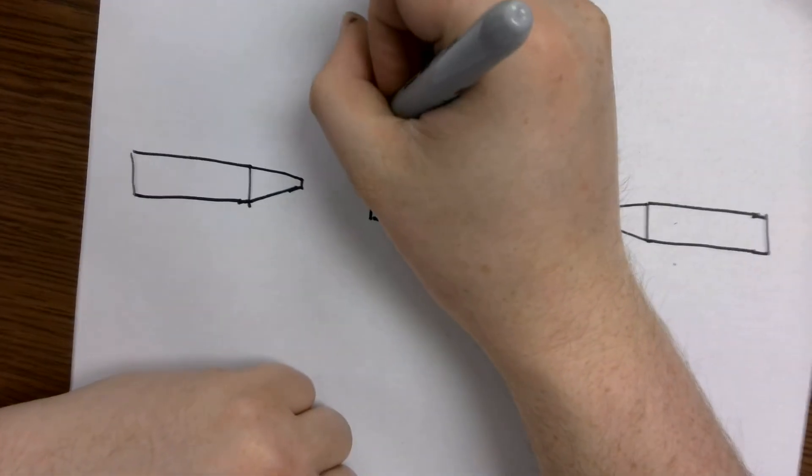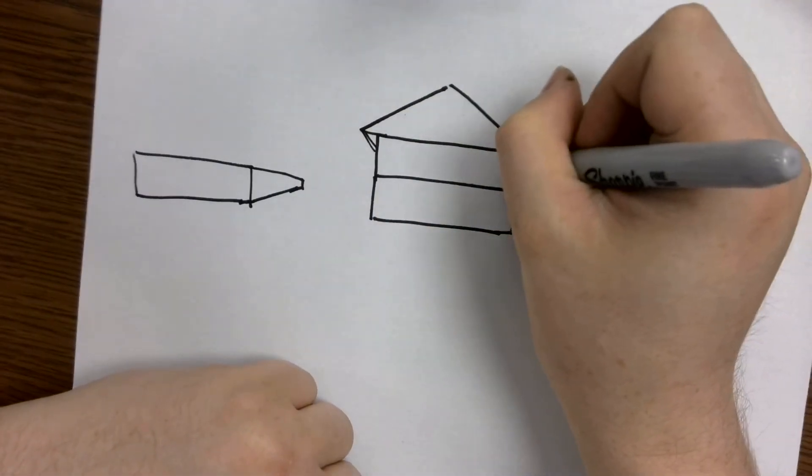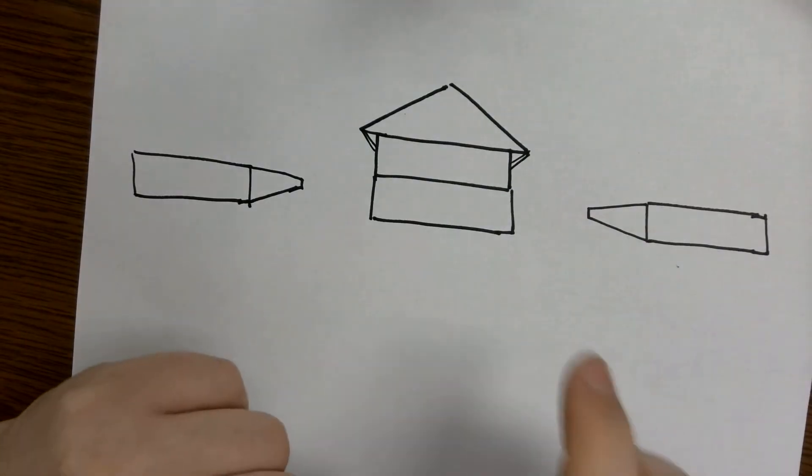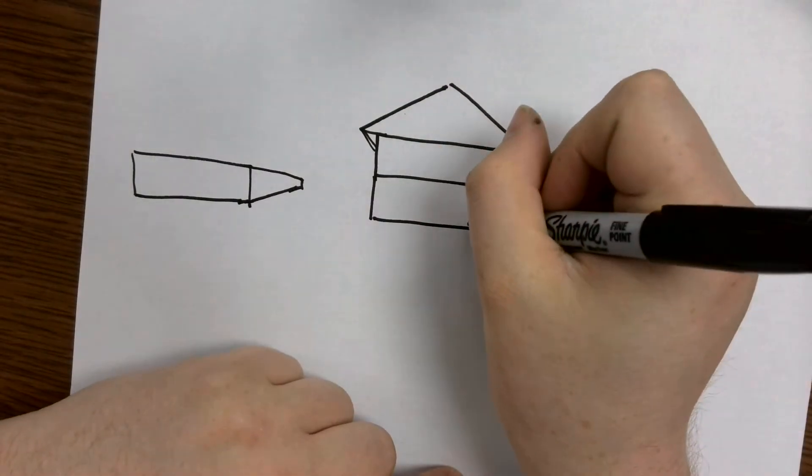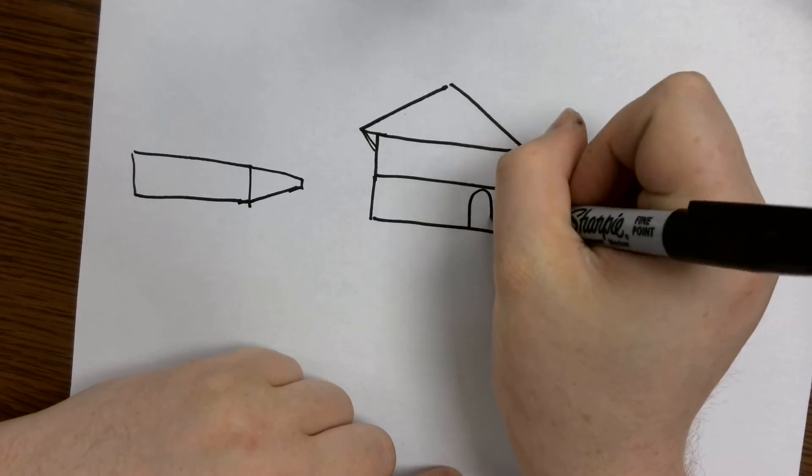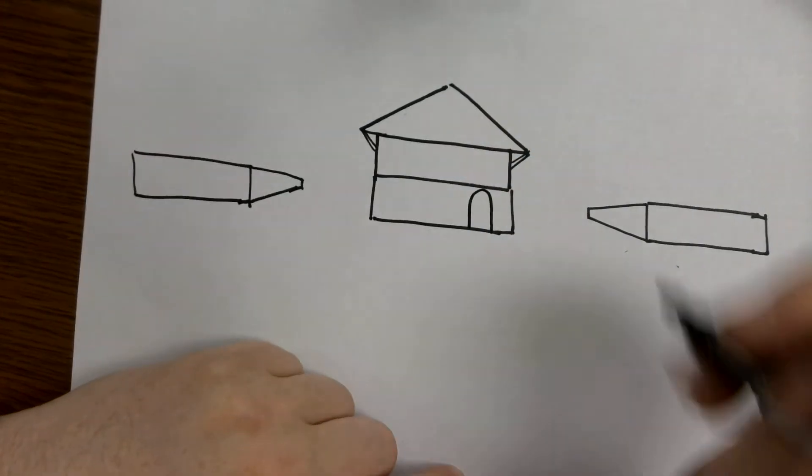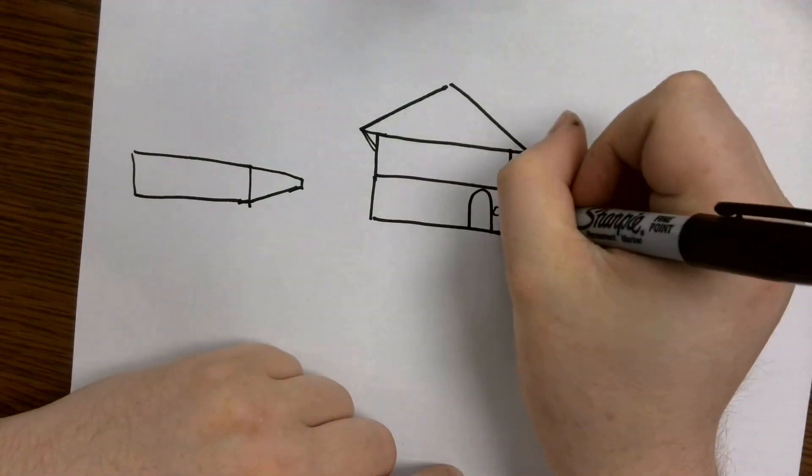Maybe go in and add a little wooden support here for the roof. A little cantilever support going on. And then we're going to go in and just add a little door right here off to the side so it's not in the middle. And add some texture.